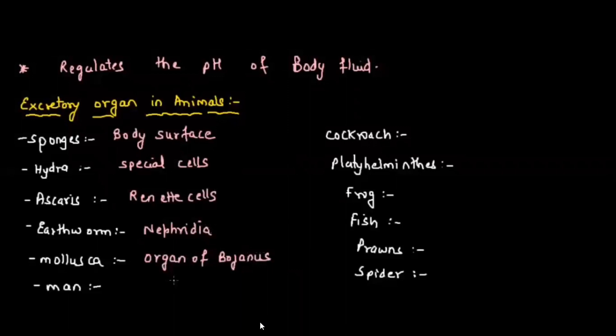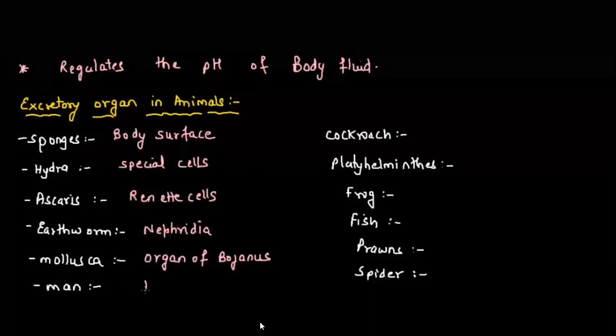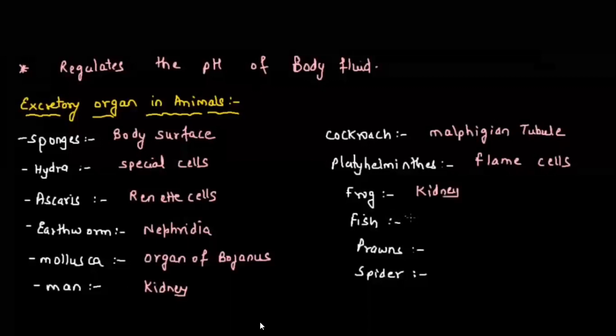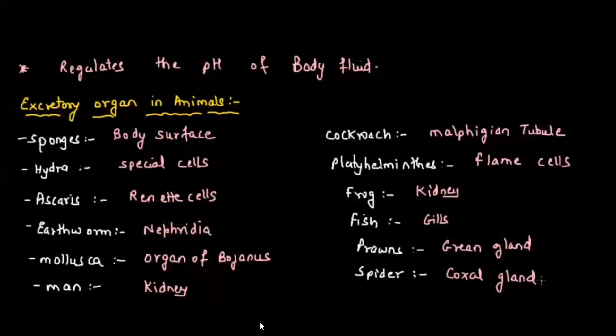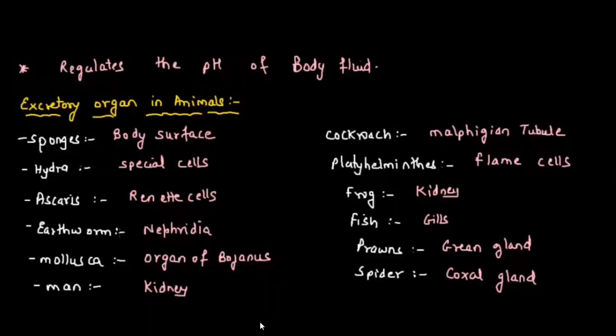Man excretes through the kidney — more specifically the nephron. Cockroach excretes through Malpighian tubules. Platyhelminthes excrete via flame cells. Frogs and fish excrete through the kidney and gills respectively. Prawns excrete through the green gland. Spiders excrete through the coxal gland. For MCQs, remember: man — kidney/nephron, cockroach — Malpighian tubules, prawn — green gland, spider — coxal gland, mollusca — organ of Bojanus.